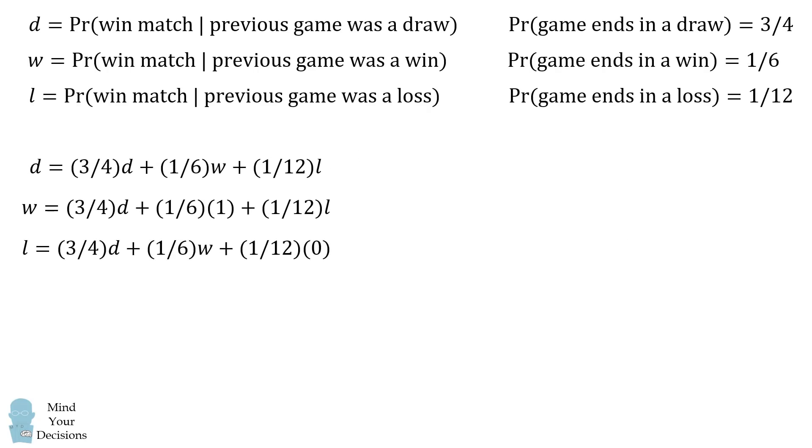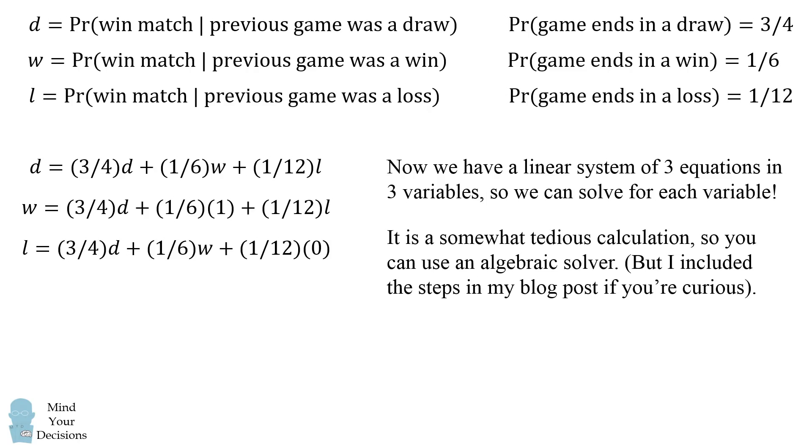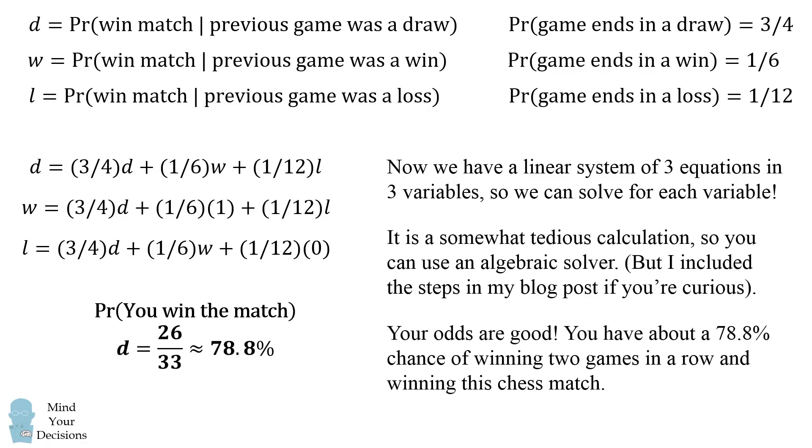So we now have three different equations in three variables. We have a linear system of three equations and three variables, so we can solve for each variable. It's a somewhat tedious calculation, so you can use an algebraic solver. If you're curious, I provided these steps in detail in my blog post. Ultimately, we get the probability you win the match is equal to the value for D which is equal to 26 over 33, which is approximately 78.8%. Your odds are pretty good. You have about a 78.8% chance of winning two games in a row and winning this chess match. Did you figure it out?